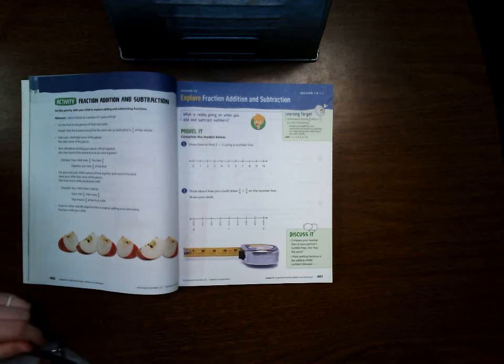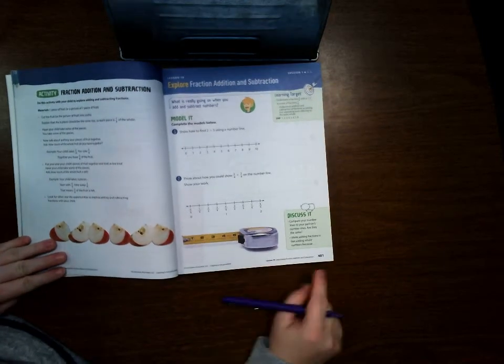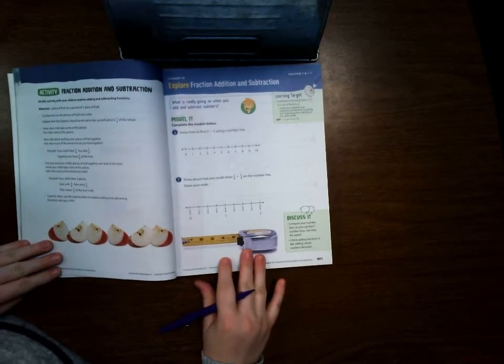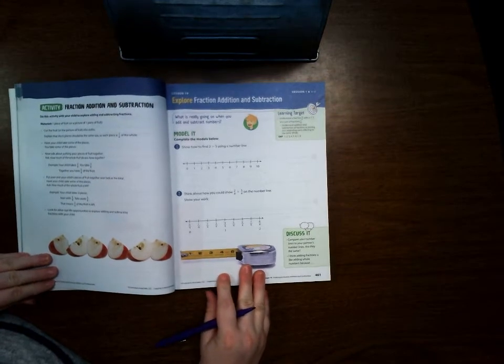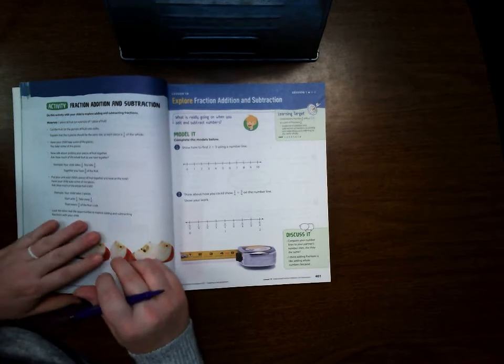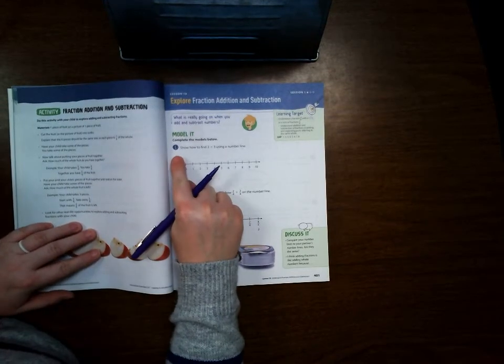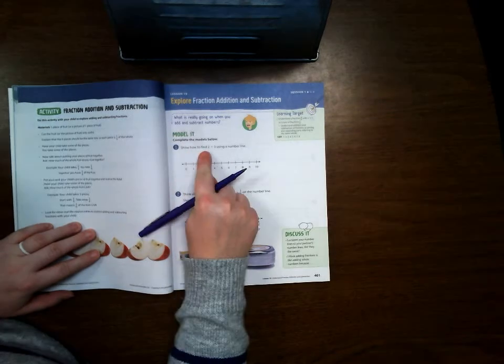All right students, this is Lesson 19, Session 1. We are on page 401 and this lesson is exploring fraction addition and subtraction. Let's get started right here on number one. It says show how to find 2 plus 3 using a number line.